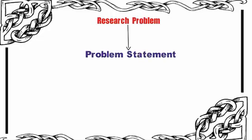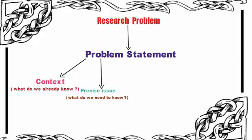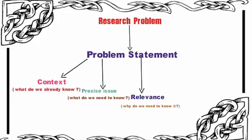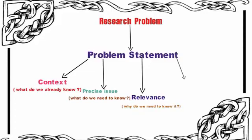An effective problem statement is concise and concrete. It should put the problem in context. What do we already know? Describe the precise issue that the research will address. What do we need to know? Show the relevance of the problem. Why do we need to know it? Set the objectives of the research. What will you do to find out?